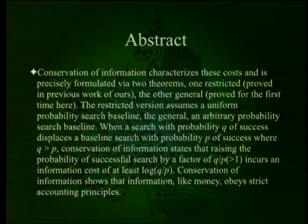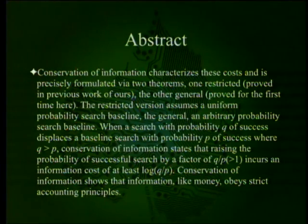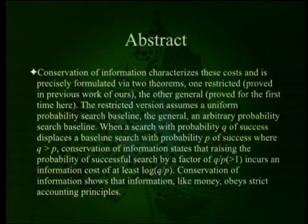The restricted version assumes a uniform probability search baseline. When a search with probability Q of success displaces a baseline search with probability P of success, where Q is greater than P, conservation of information states that raising the probability of successful search by a factor of Q over P incurs an information cost of at least log Q over P — that's log base 2. Conservation of information shows that information, like money, obeys strict accounting principles: it's easy to lose it, but a lot harder to earn it.